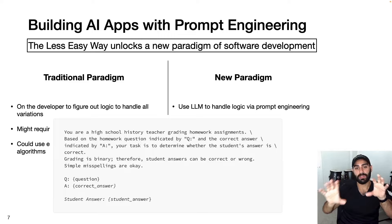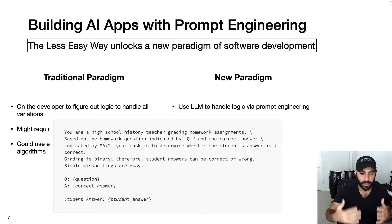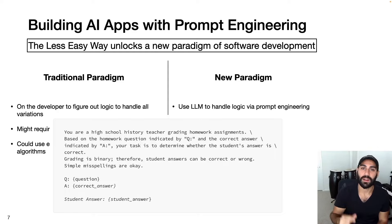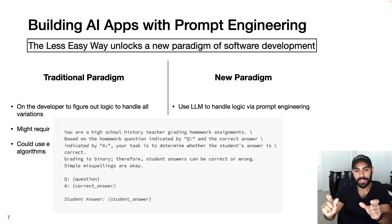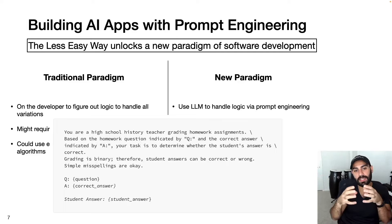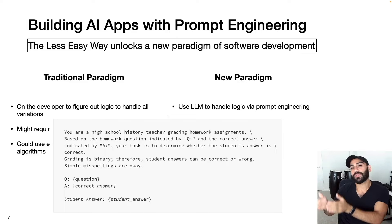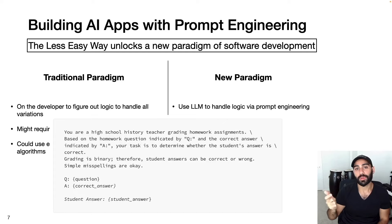Comparing these two approaches: approach one was to manually write a string matching algorithm handling all edge cases — that might take me a week. Comparing that to how long it took to write this prompt — about two minutes. We're talking about minutes versus days or weeks of software development just for the core logic. That's the power of prompt engineering and this new way of thinking about programming.